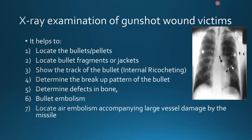X-ray examination of a gunshot wound victim helps to: locate the bullet or pellets in the body; locate bullet fragments or jacket; show the track of the bullet if there is internal ricochet; determine the breakup pattern of the bullet; identify bone defects and fractures; locate bullet embolism; and locate air embolism accompanying large vessel damage by the missile.